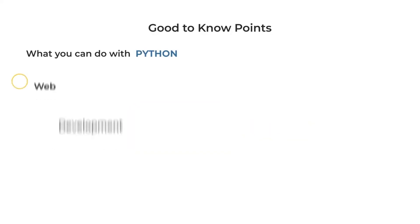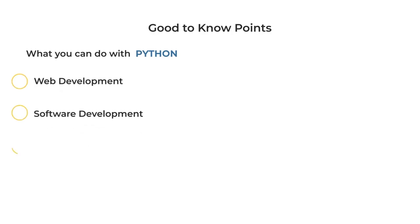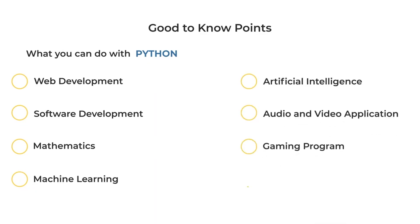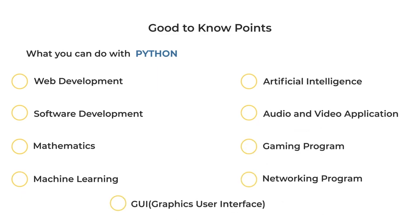With Python, you can do web development, app development, math and data reduction, machine learning, audio and video applications, game programming, network programming, and GUI — graphical user interface. There are various ways to use it. Python is a very simple language, and as of now it is the most popular and easiest programming language. You can pick any area — for example, if you are interested in game programming, you can go for it.